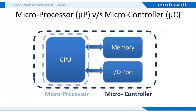All embedded systems also contain some types of inputs and outputs. For example, in a microwave oven, the inputs are the buttons on the front panel and a temperature probe, and the outputs are the human-readable display and the microwave radiation. So, for interaction of the microcontroller with inputs and outputs, some input-output hardware mechanism is provided on-chip.